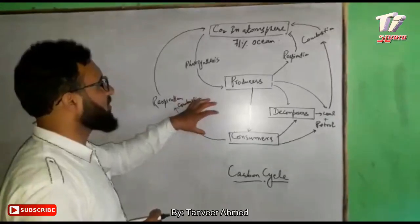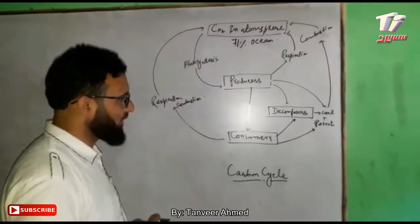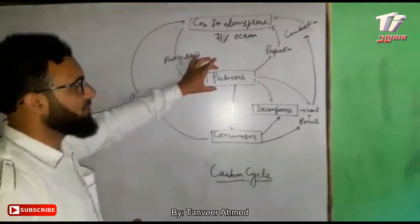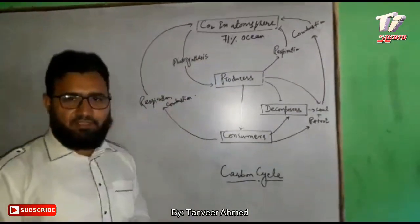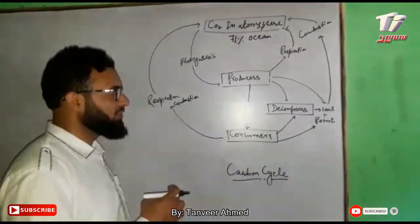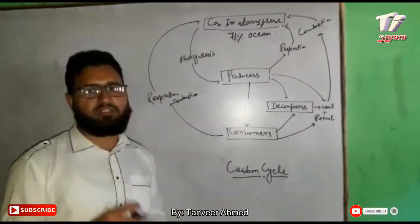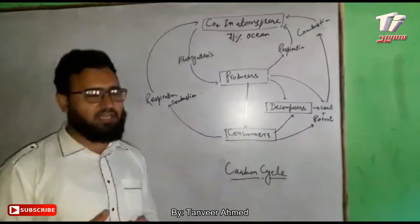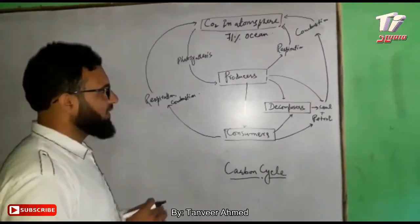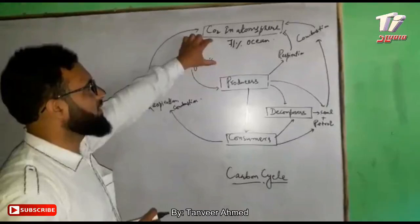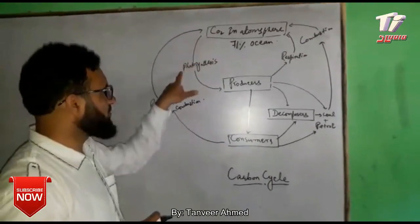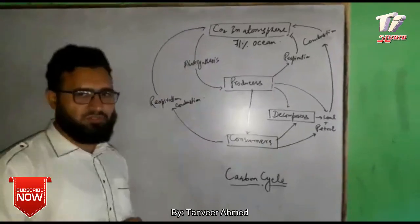First of all, I would like to start with this. This is called Producers. Producers are those who make food themselves. These are green plants, grasses, etc. Producers can utilize the carbon dioxide by the process of photosynthesis.